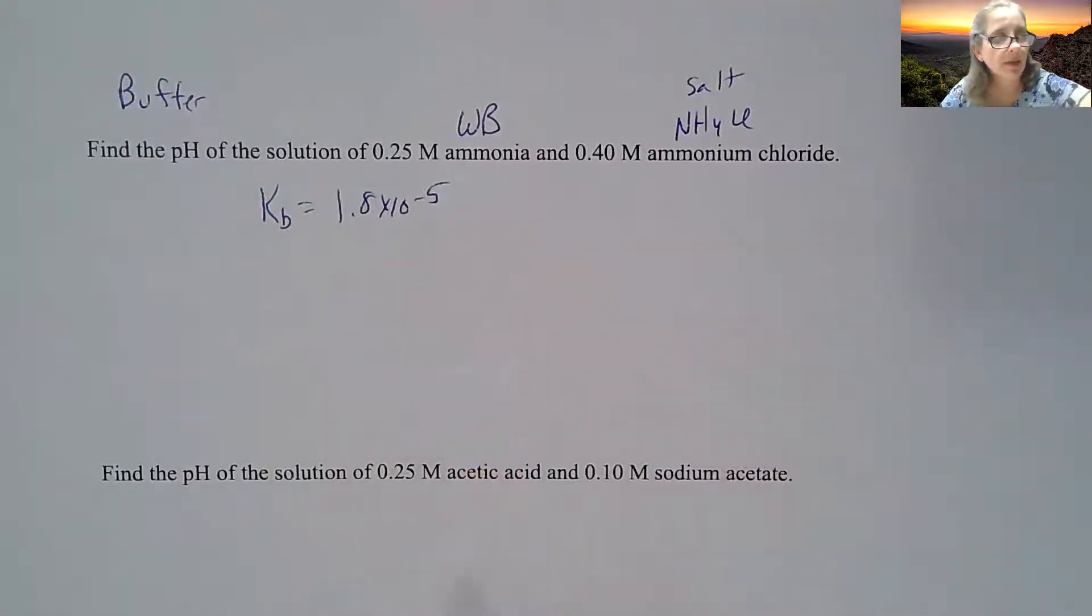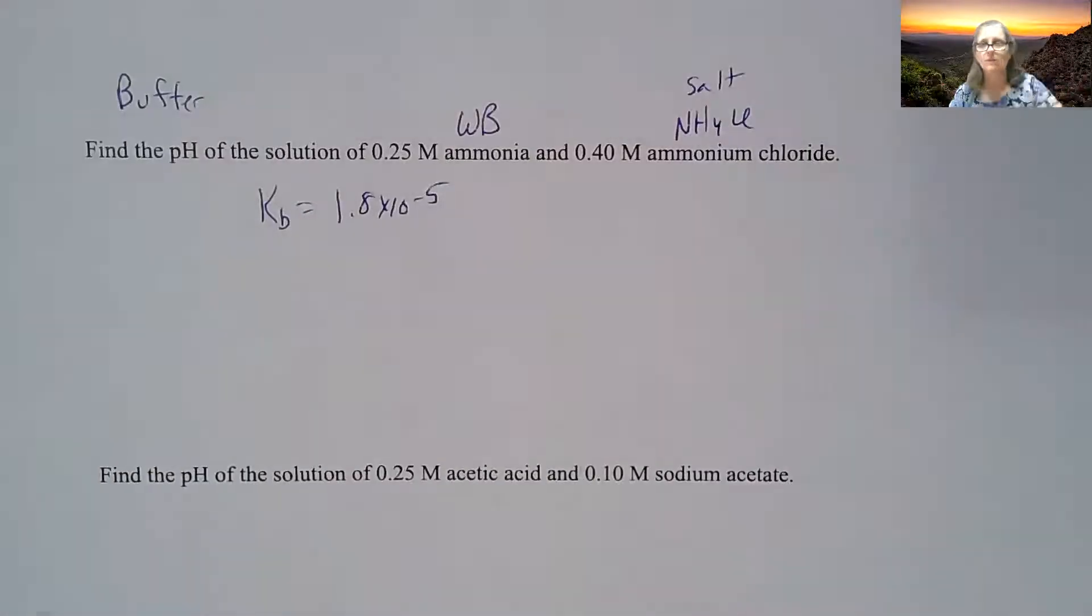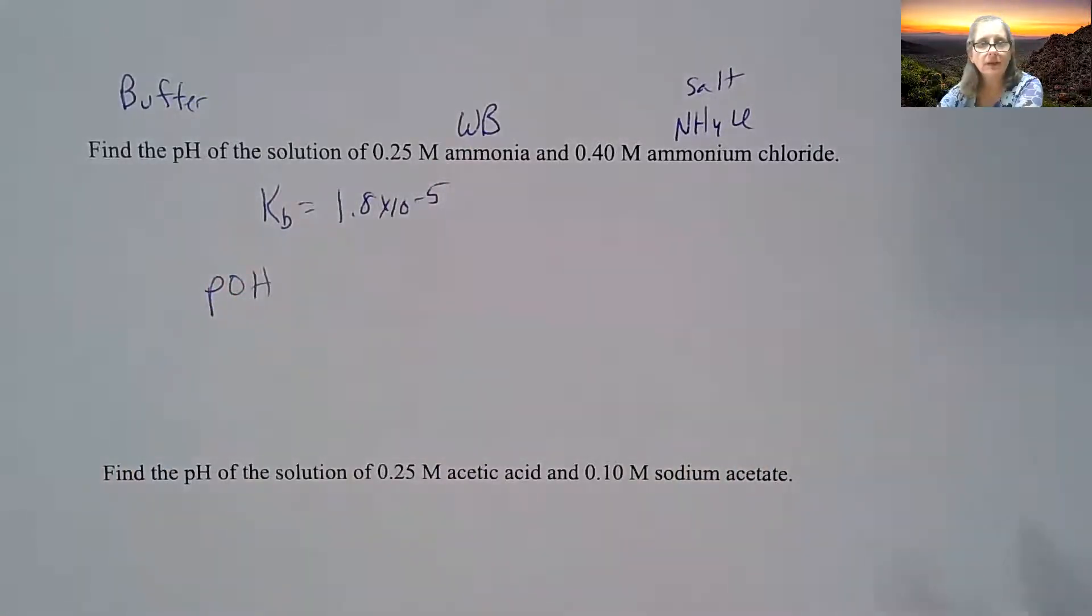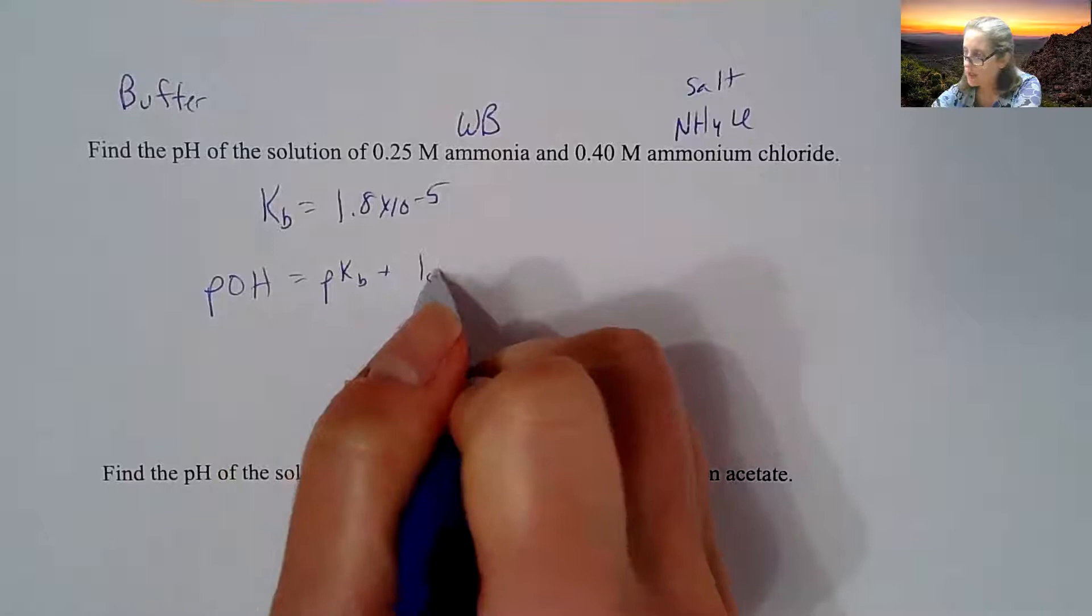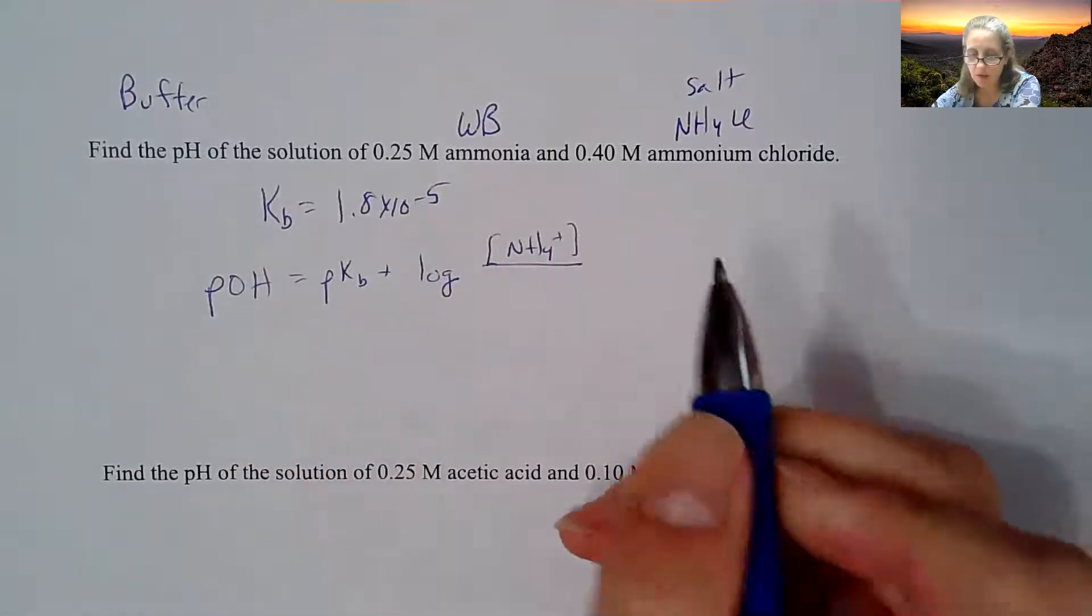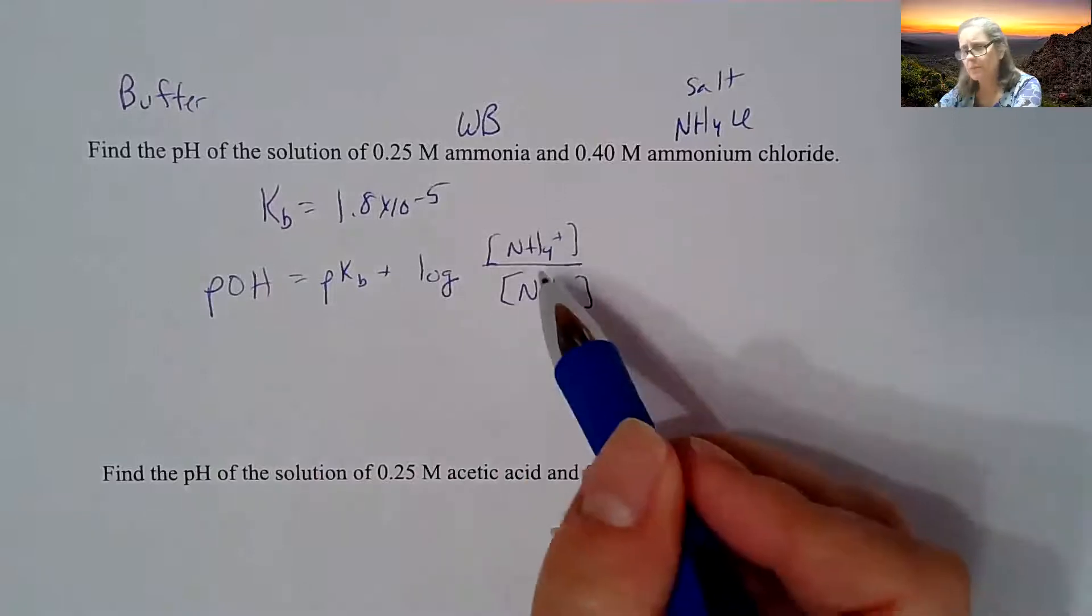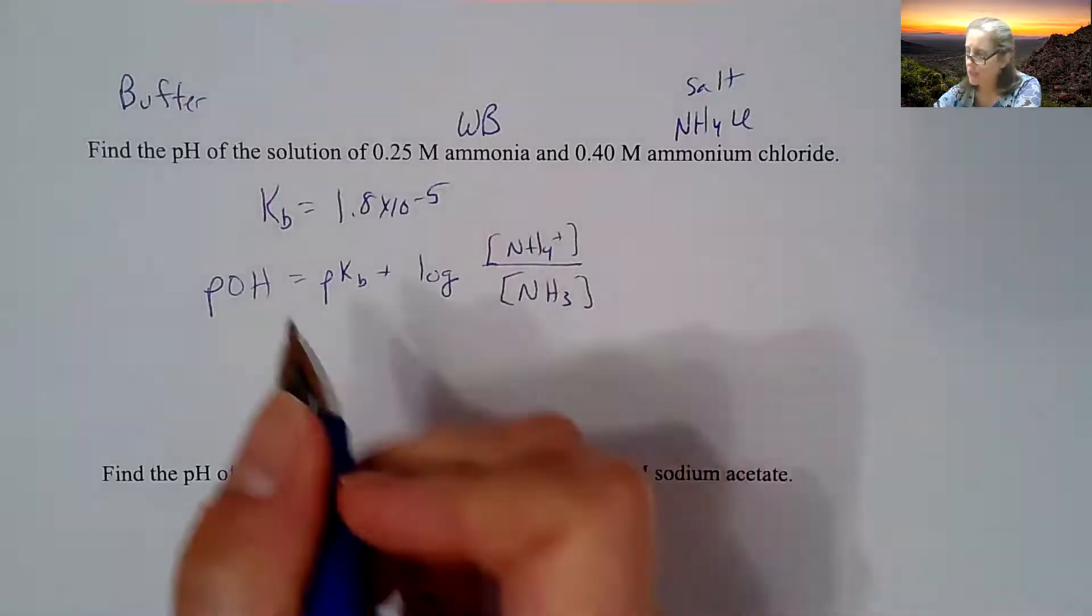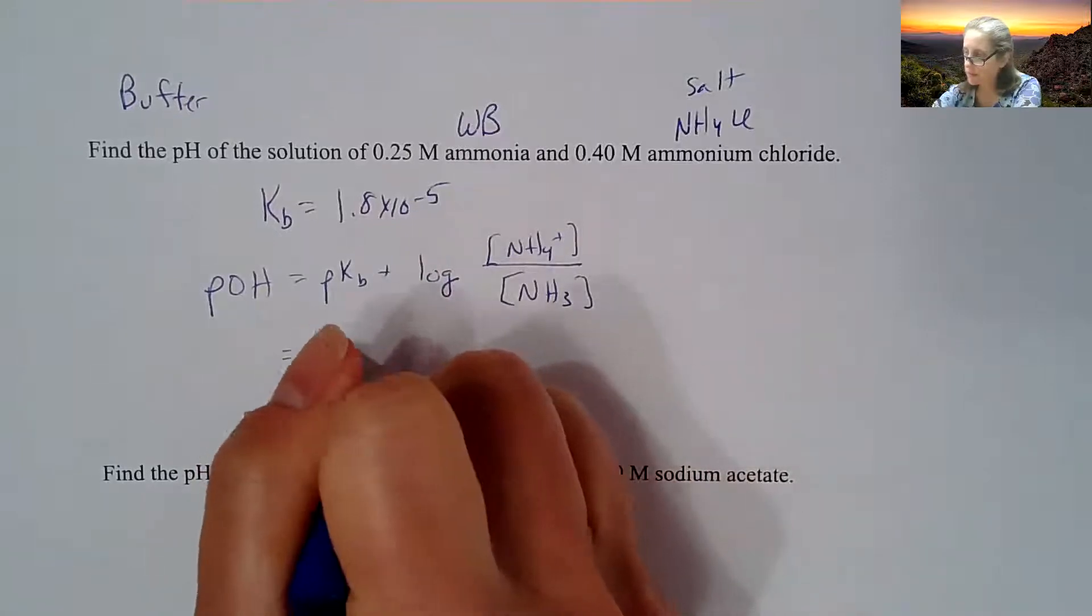So I can use the Henderson-Hasselbalch equation, but I do need to look up ammonia's Kb value, and it happens to be 1.8 times 10^-5. So I guess I should have also mentioned that while you're doing this video, you probably need your Ka and Kb table as well. So I'm going to do a calculation with the POH version of the Henderson-Hasselbalch equation. So that's going to be the pKb plus the log of NH4+ over NH3. So that means the pKb is going to be this number, negative log of it, and it comes out to be 4.74.